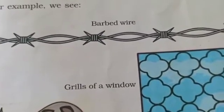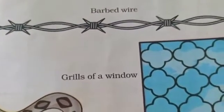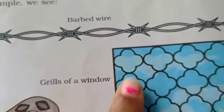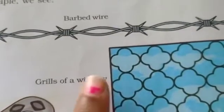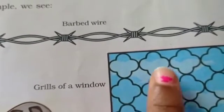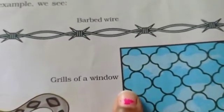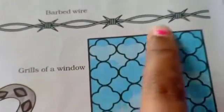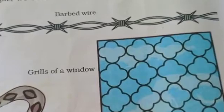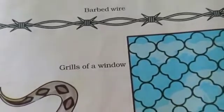Next picture: grills of a window. So we have to see — the window grills have horizontal and vertical lines, so this is a design. The pattern here is the same repeated throughout, and the same pattern repeats here and here. The whole window grill is the same repeated pattern.